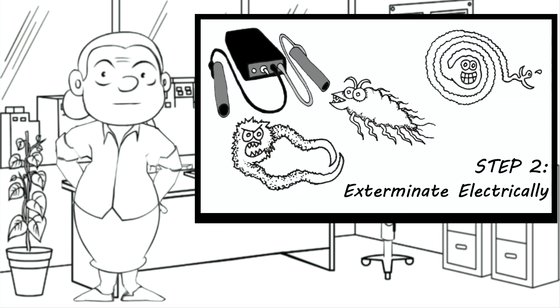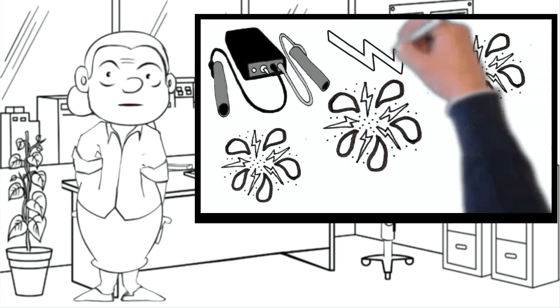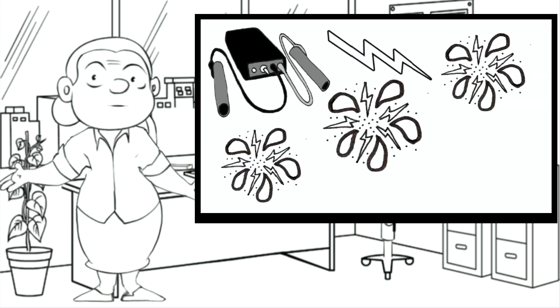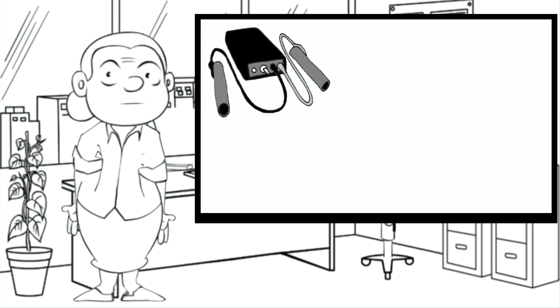Step two is to exterminate them electrically. Within minutes, they fall out of the doorways to our cells. Your white blood cells are waiting for them and will gobble them up in a grand feast. But remember,